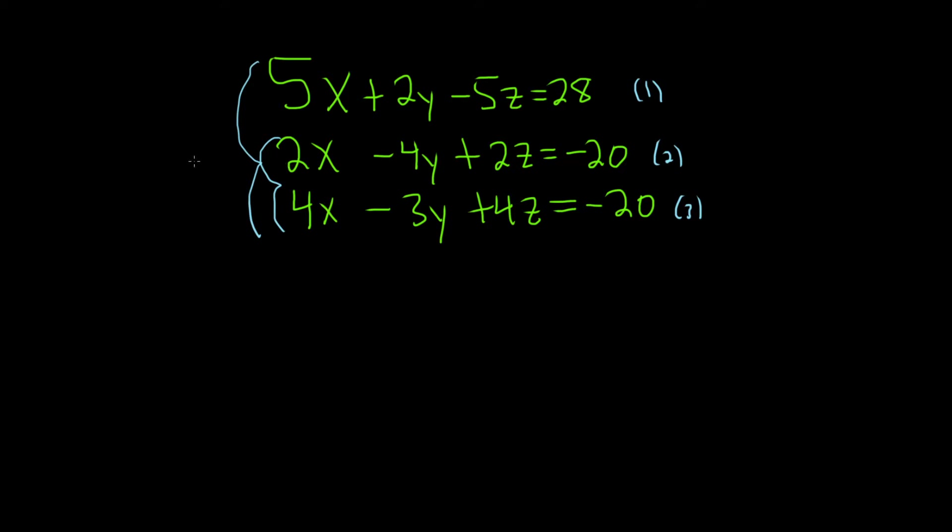I'm going to multiply this second equation by negative 2. That way this will become a negative 4, and when we add it to the one below it, they'll cancel. So let's multiply the second equation by negative 2.